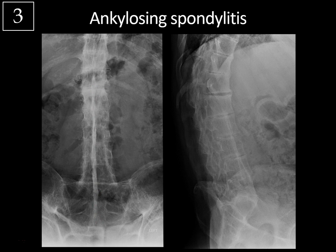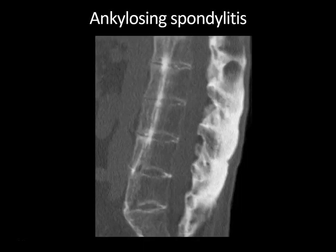On the CT scan, you can even better see the ossification of the intraspinous ligament, giving that dagger appearance — classic for ankylosing spondylitis. For a thousand bonus points: which 80s hair metal band had a guitarist with ankylosing spondylitis? Yes, Mötley Crüe with Mick Mars — but that didn't slow him down.